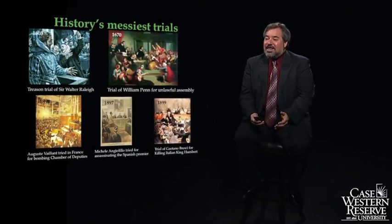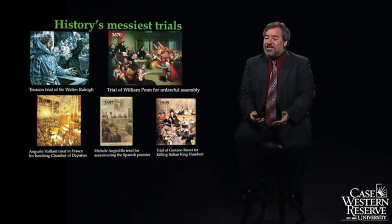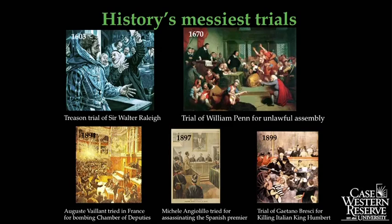Instead, they were going to be disruptive, try to distract attention, and go down as martyrs. To do that, they had a playbook. The judges also had to decide what to do to disrupt the tyrants from hijacking the trial. We have historic examples going back to the treason trial of Sir Walter Raleigh in 1603, or the trial of William Penn for unlawful assembly in 1670.